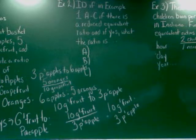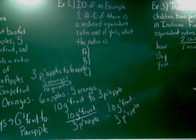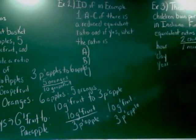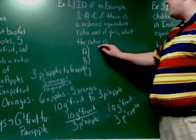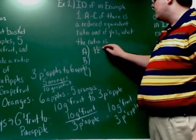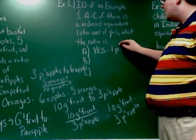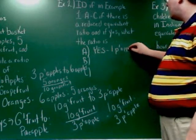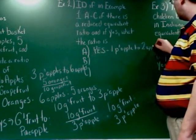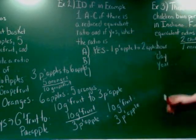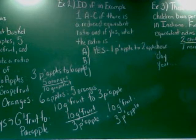So back over in A, we wrote out that there was 3 pineapples to 6 apples. Well, I can reduce 3 and 6. I can divide 3 out of each other. So I could also write it as 1 pineapple to 2 apples. That's all I did. I just reduced it like I would reduce a fraction. If it said 3 over 6, I'd reduce it to 1 over 2. That's what I did right there.